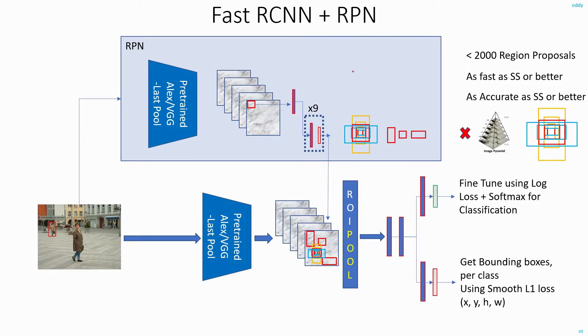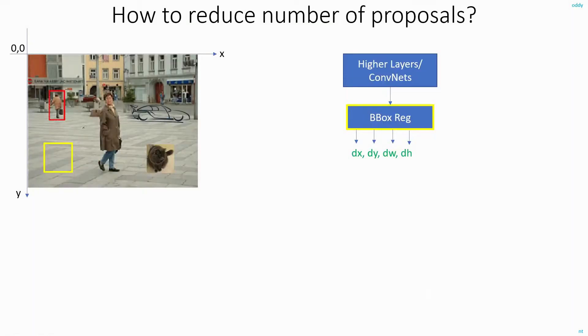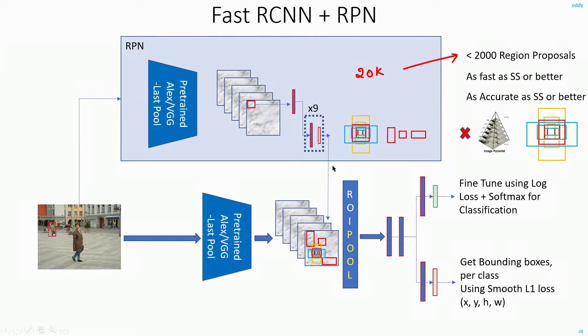To answer the question of how do I reduce the number of proposals from 20,000 to around 2,000, we can borrow the hint from how selective search works. Basically, if you are using selective search or edge boxes, that technique will be eliminating all the background regions from the image from your downstream processing.